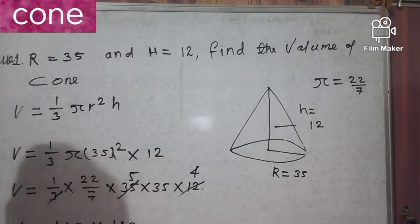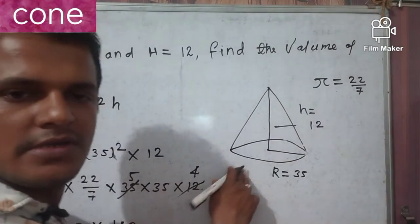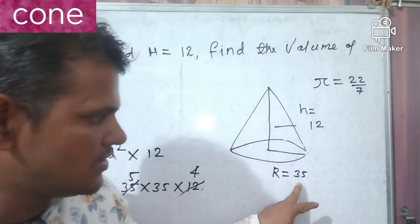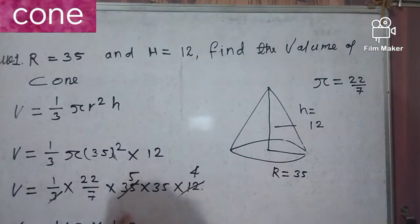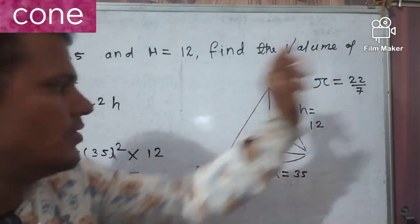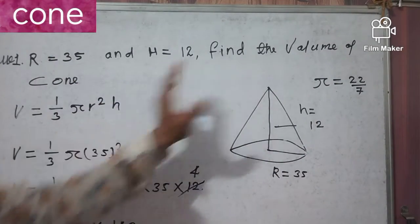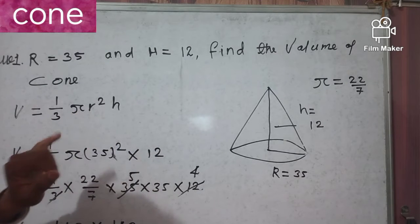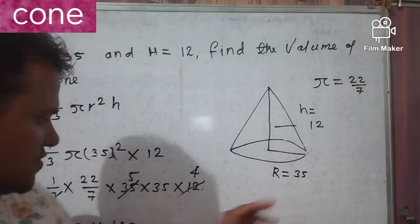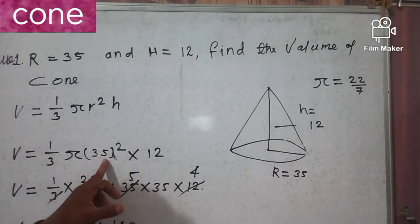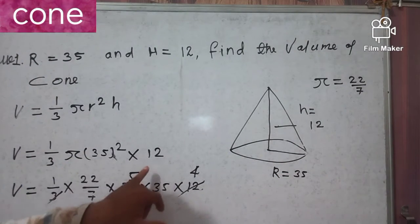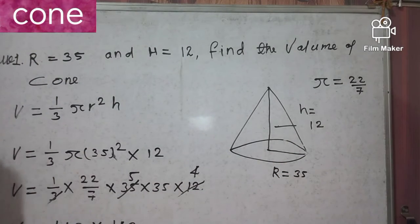So the volume is equal to 15,400. For this cone with height 12 and radius 35, our target was to find the volume. The formula is one-third times pi times r squared times h, where r squared is 35 squared and h is 12. After calculating, we found the volume equals 15,400.